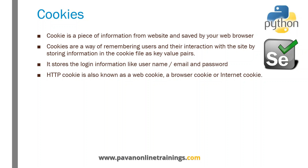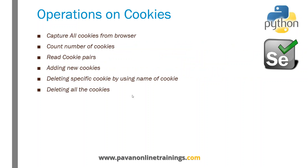As part of automation, we also need to verify cookies — whether your application is creating cookies or not, whether we are able to delete cookies or not, and whether we are able to add new cookies or not. These are the kinds of things we need to verify. Normally we can capture all the cookies from the browser, count how many cookies are created, read the cookies — basically cookie information is available in key-value pair format. We can read all names and values, add new cookies to the browser, delete a specific cookie, and also delete all the cookies. These are the different actions we can perform on cookies.